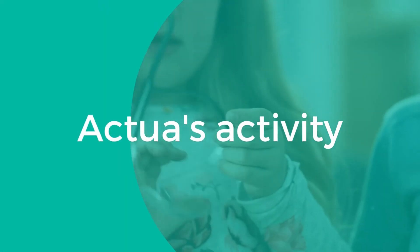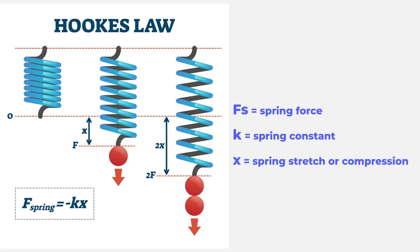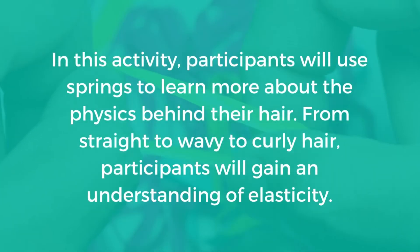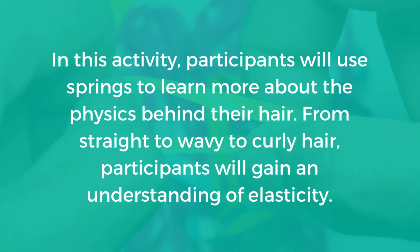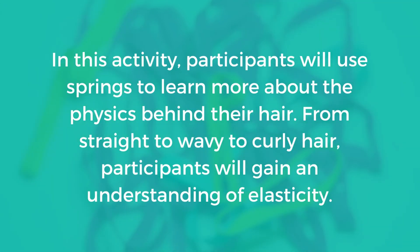Now that we've learned just a little bit more about hair, let's dive into this activity. We will be using the principles of Hooke's Law to calculate our own hair elasticity. Hooke's Law is the rule that describes the link between how far a spring can extend and how much force it will take for the spring to return back to its original position. Participants will use springs to learn more about the physics behind their hair, gaining an understanding of hair elasticity from straight to wavy to curly hair.